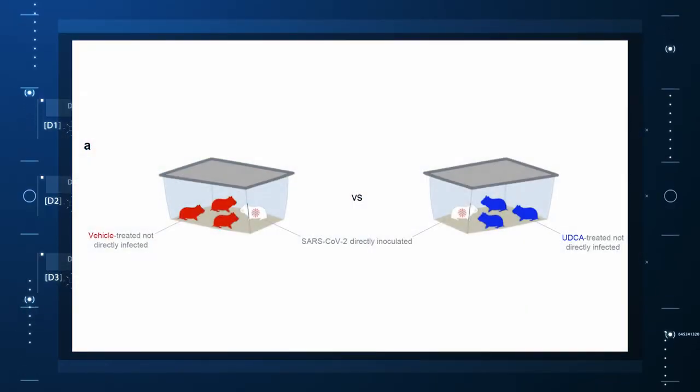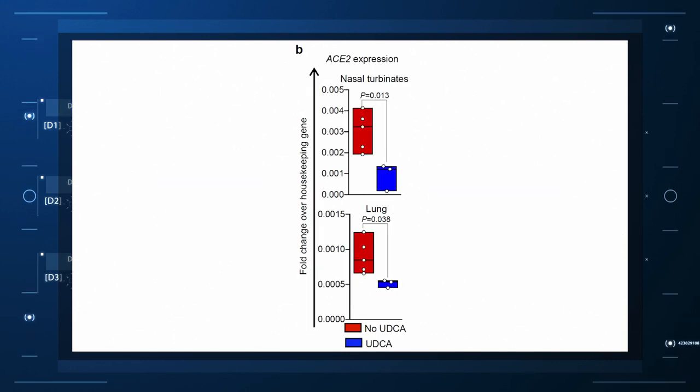But test tubes aren't people. So they moved up to mice and Syrian golden hamsters. These cute fellows are quite susceptible to human COVID and have been a model organism in countless studies. Mice and hamsters treated with UDCA in the presence of litter mates with COVID infections were less likely to become infected themselves compared to mice not so treated. They also showed that mice and hamsters treated with UDCA have lower levels of ACE2 in their nasal passages.